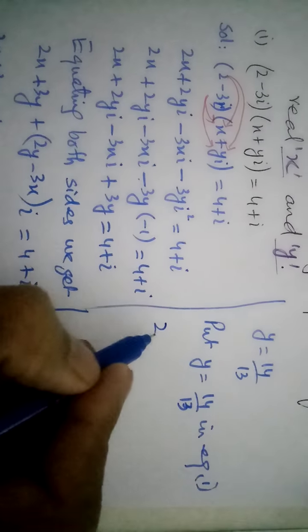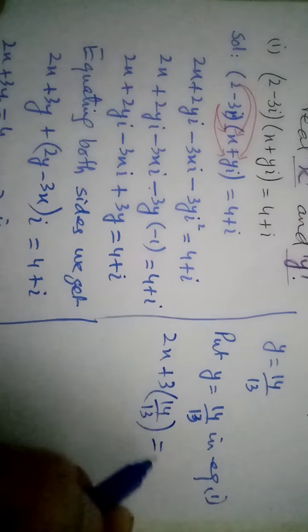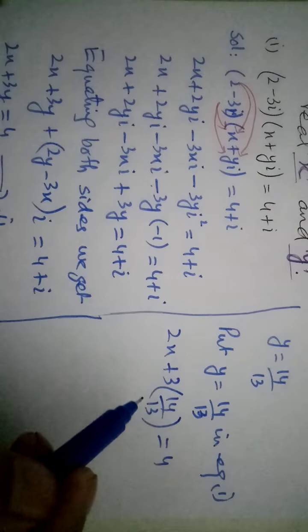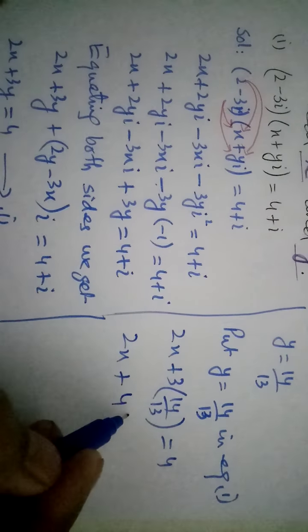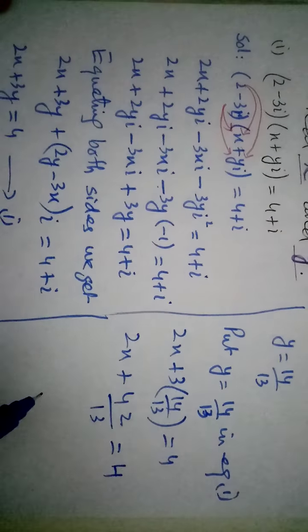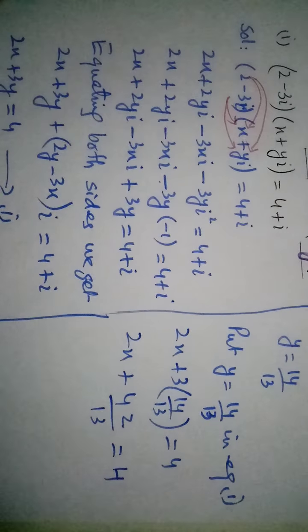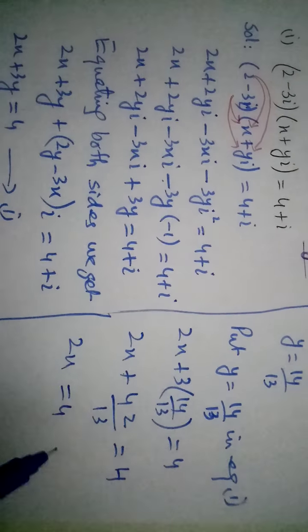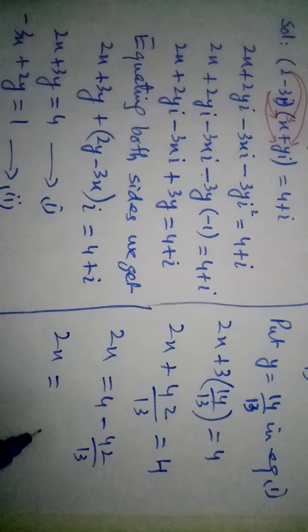Put y is equal to 14 over 13 in equation 1. Equation 1 kya tha: 2x plus 3y ki jaga 14 over 13 is equal to 4. Now multiplying each term by 13. Yaha easy way lelay. Either plus ho raha hai, udher jake 42 over 13 minus ho jayega. And again, iska kya kya lelay. LCM hum lelay.